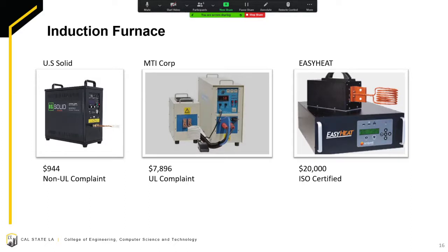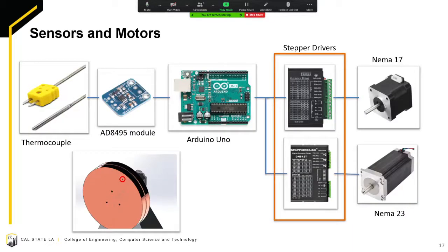As for the induction furnace, we have searched for several options. We have U.S. Solid, MTI Corbin, Easy Heat. However, one of the issues that we had is we're trying to look for an induction furnace that's both inexpensive and also abides by school safety policy. So we have yet to find one yet and we're still looking now for one.